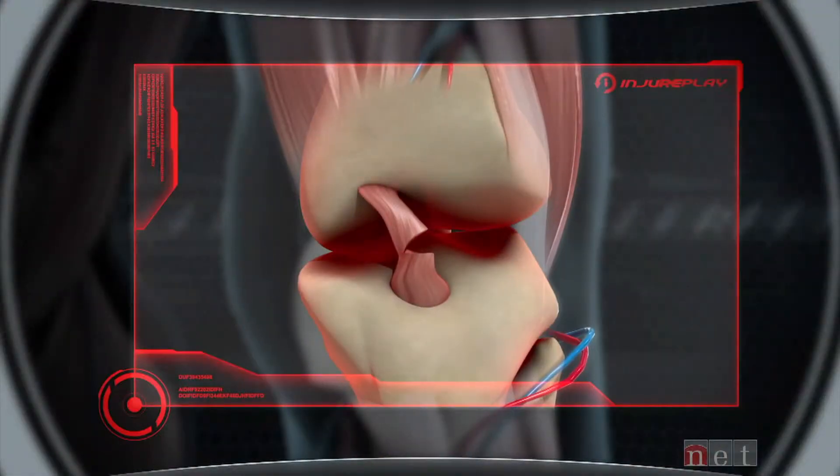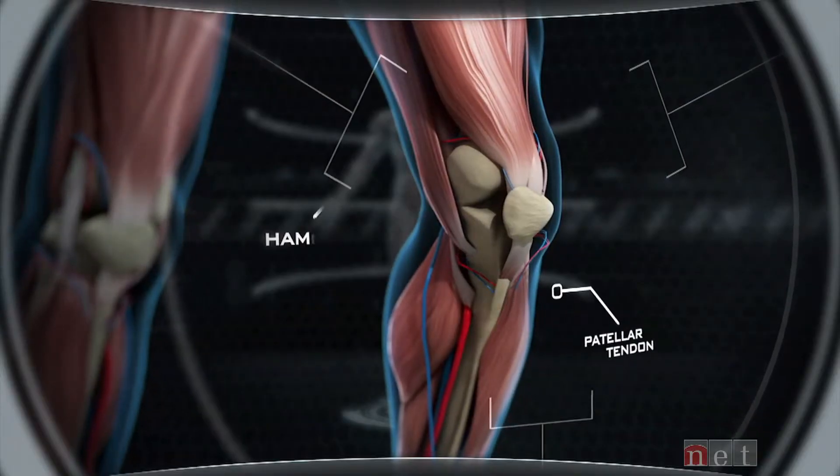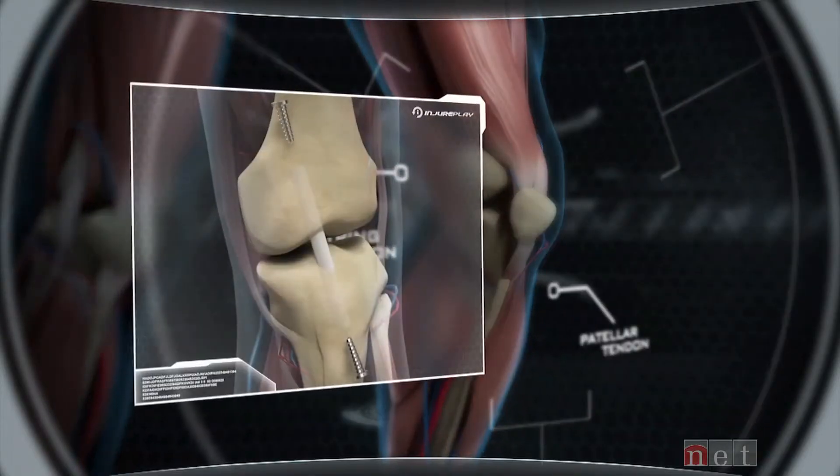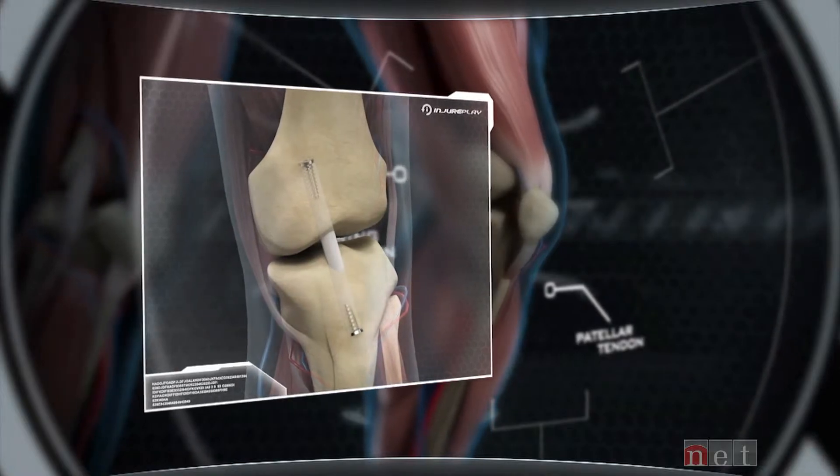If completely torn, an ACL needs to be surgically repaired. A graft harvested from the patellar tendon or hamstring tendon is inserted where the former ACL was located and secured by two screws.